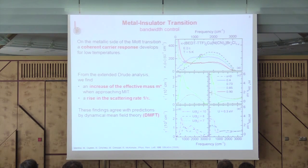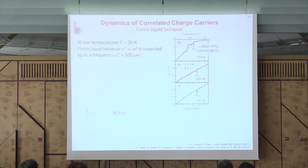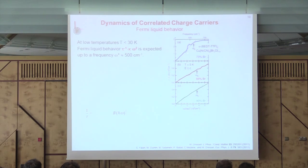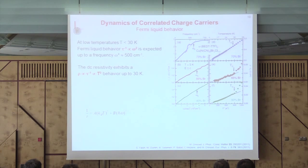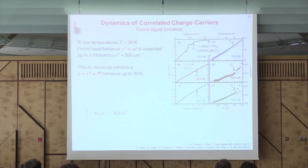Looking more closely at the frequency dependence: if we plot the scattering rate — after subtracting the residual scattering rate — as a function of frequency squared, we see a linear behavior on the metallic side. As you get closer to the Mott insulator transition the slope increases, but it always follows an ω² behavior over quite a large frequency range, up to about 500 wave numbers. The resistivity also shows T² behavior for a large temperature range up to about 30 Kelvin, with the slope increasing as you approach the Mott insulator transition. So the scattering rate is T² dependent and ω² dependent, just as expected for a Fermi liquid.